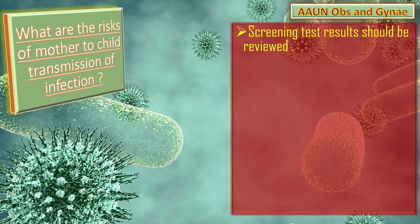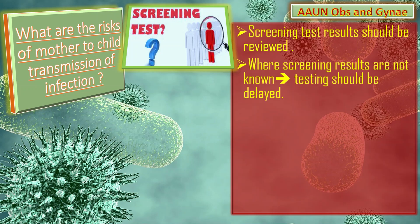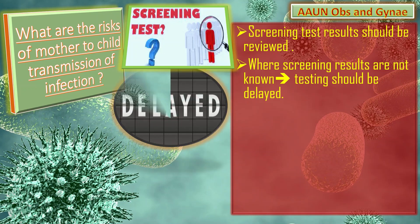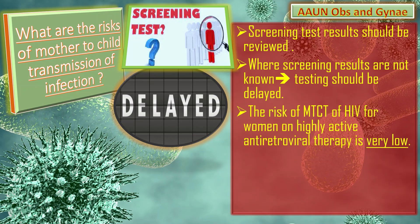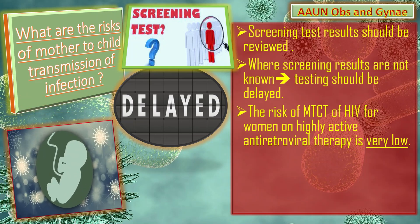What are the risks of mother-to-child transmission of infection? Screening results for blood-borne viruses, viral load, and antigen test results should be reviewed when an invasive test is considered, and individualized risk of viral transmission should be discussed. Where screening results for blood-borne viruses are not known, testing should be delayed until HIV status can be determined.